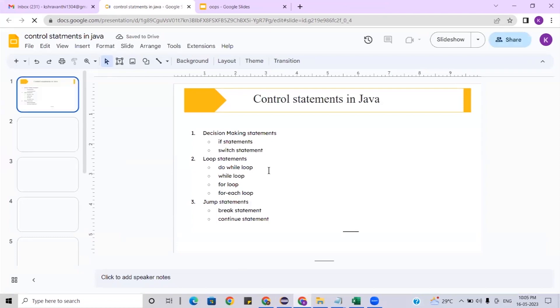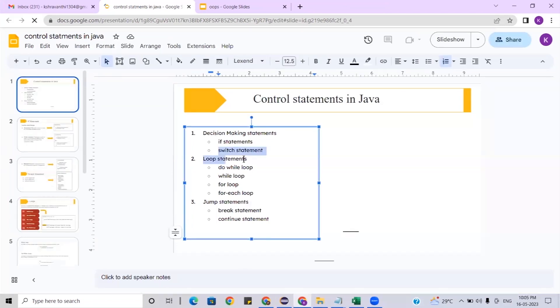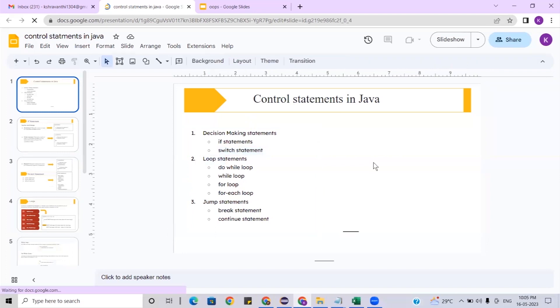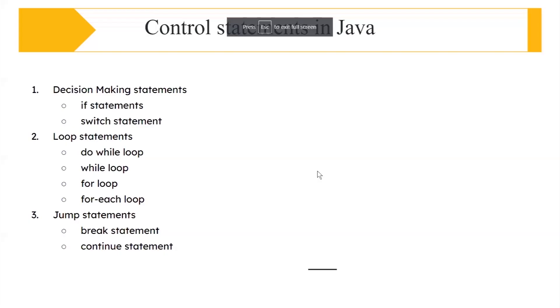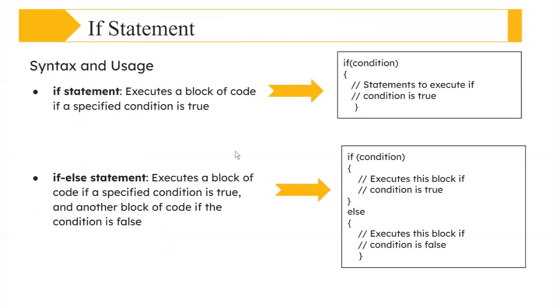I gave you an overview yesterday regarding the session: the decision-making statement, loop statement — which is also called as iterative statement — or jumping/looping statements, and then we have the break and continue statements.